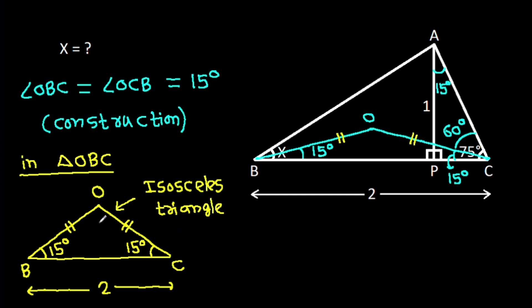From point O, if we make a perpendicular on BC, suppose this point is Q, then BQ will be 1 and CQ will be 1.